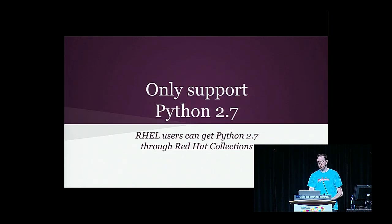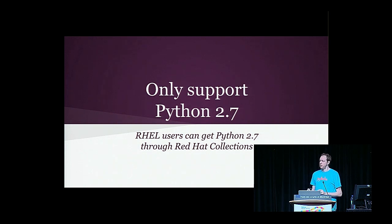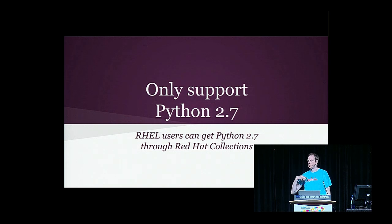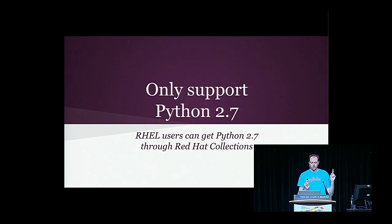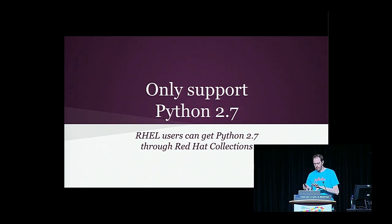I would suggest you only support Python 2.7. Python 2.6 was released in 2008 and is no longer supported for bug fixes, so while you can support 2.6 if you choose, I wouldn't bother. You'd have to work through bugs in the standard library that have since been fixed in 2.7. Python 2.5 and earlier is a real pain. Nick Coghlan assures me that through Red Hat collections you can get Python 2.7, so try to only do 2.7.